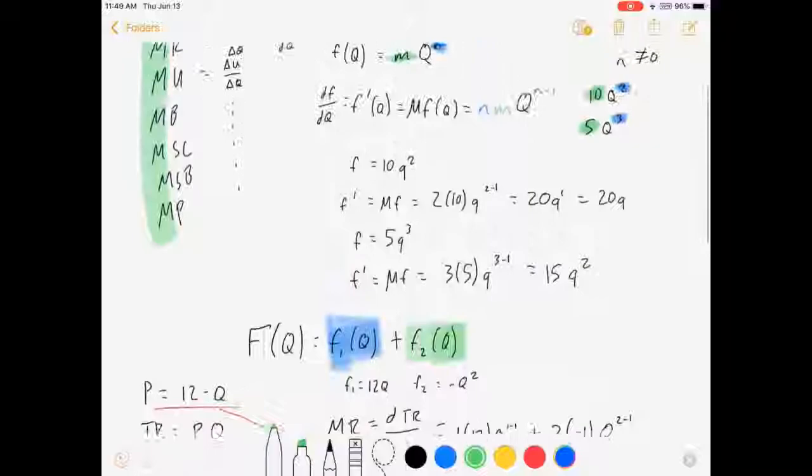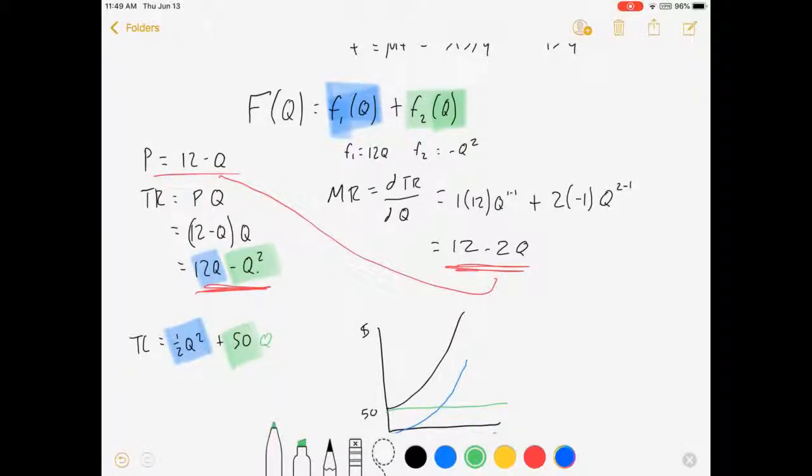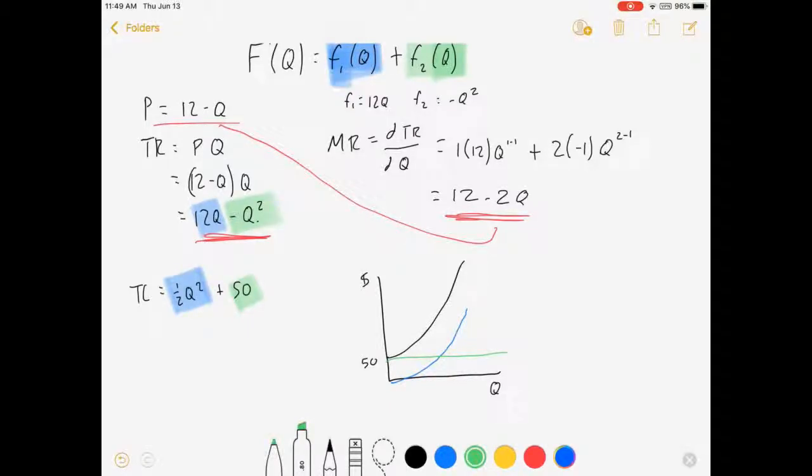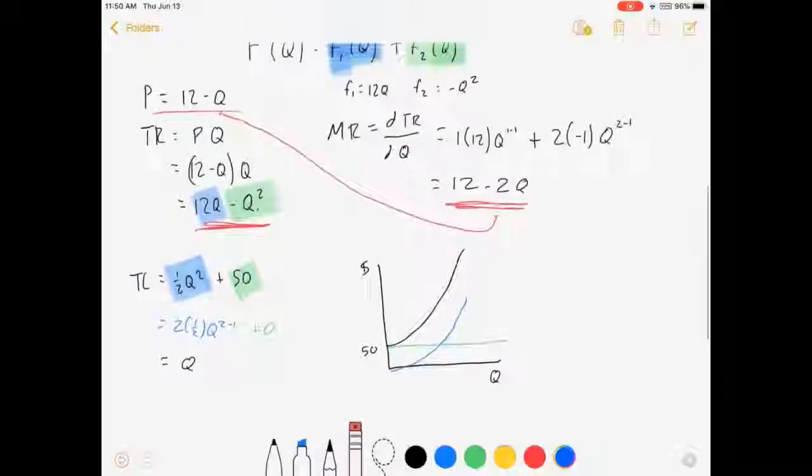So the power rule applies, as I said before, when n is not 0. But in this case, you can think of that as being times q to the 0. Power rule is not going to apply. Instead, that 50 is just going to drop out because its slope is nothing. So let's go and figure this thing out. It's 0 equals 2 times 1 half times q to the 2 minus 1 plus 0 equals q. Done. And there's how we can get our marginal cost.